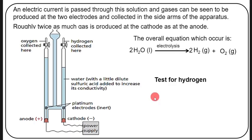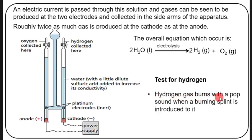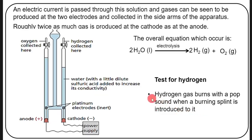You must also know the test for hydrogen. The hydrogen gas burns with a pop sound when a burning splint is introduced to it. In other words, hydrogen ignites a burning splint with a pop sound — that is the chemical test for hydrogen. We are now done with hydrogen gas and will move on to oxygen gas.